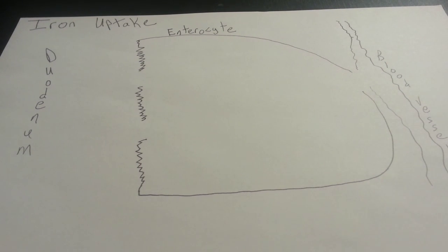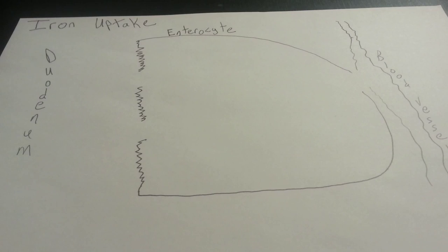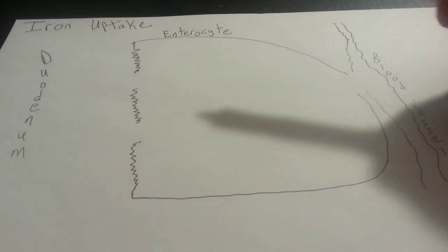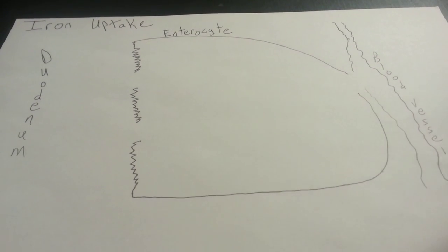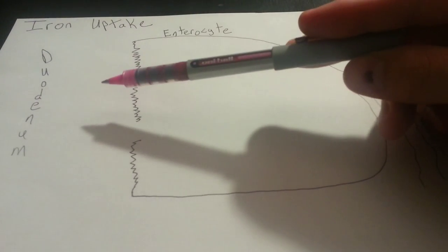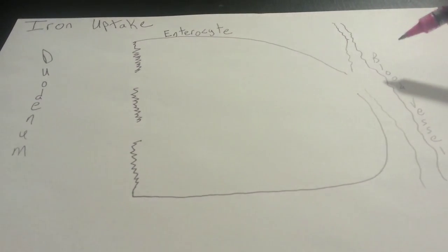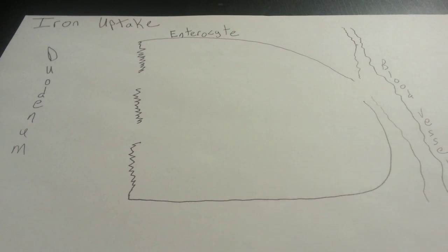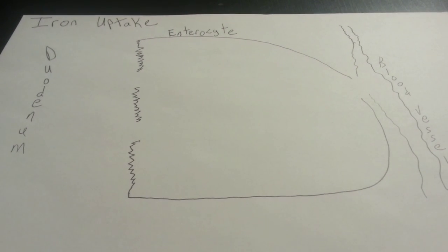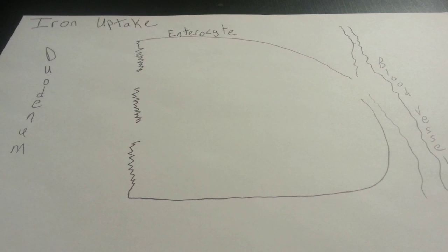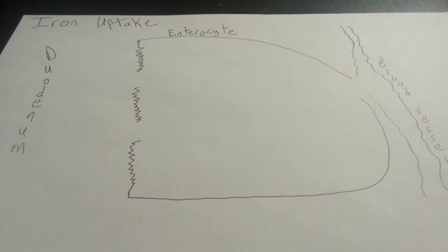Hey guys, so this video is going to be going over iron uptake. Just to get you oriented real quick here, this is our enterocyte, which is in our small intestine, specifically in the duodenum. And we've got a blood vessel over here where the iron is being uptaken into. Obviously this isn't to scale, this is just to give you an idea of what's going on when we're uptaking iron.